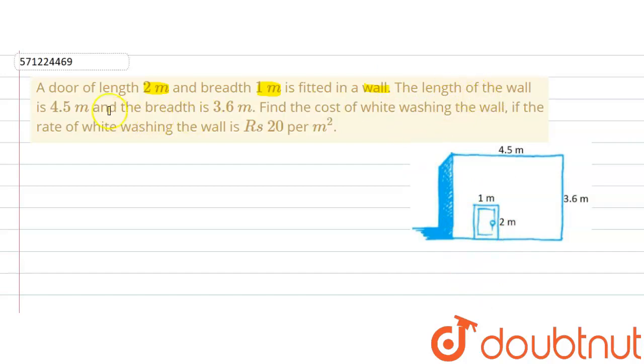Now the length of the wall is 4.5 meter and breadth is 3.6 meter. So the wall is in the shape of a rectangle where the length is 4.5 meter and the breadth is 3.6 meter.